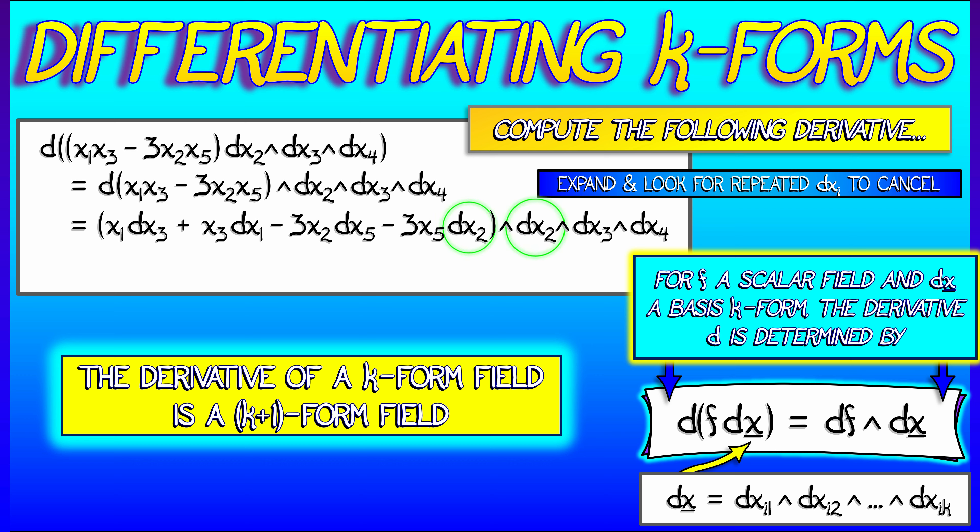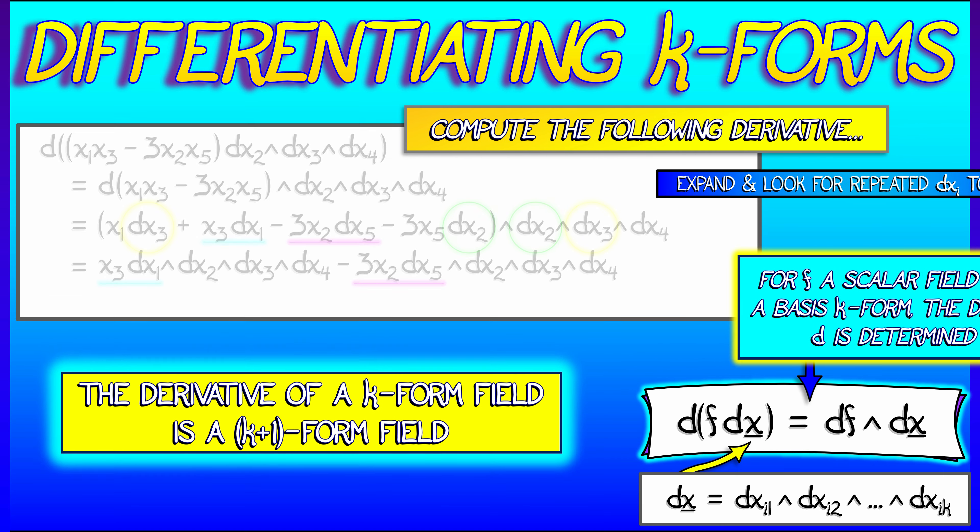And now, aha, we see some repeats. dx2 gets repeated, boom, that term's gone. dx3 gets repeated, that term is also gone. That means we look at what's left over, and we rewrite the final answer as x3 dx1 wedge dx2 wedge dx3 wedge dx4 minus 3x2 dx5 wedge dx2 wedge dx3 wedge dx4. That's it. That's not so bad.